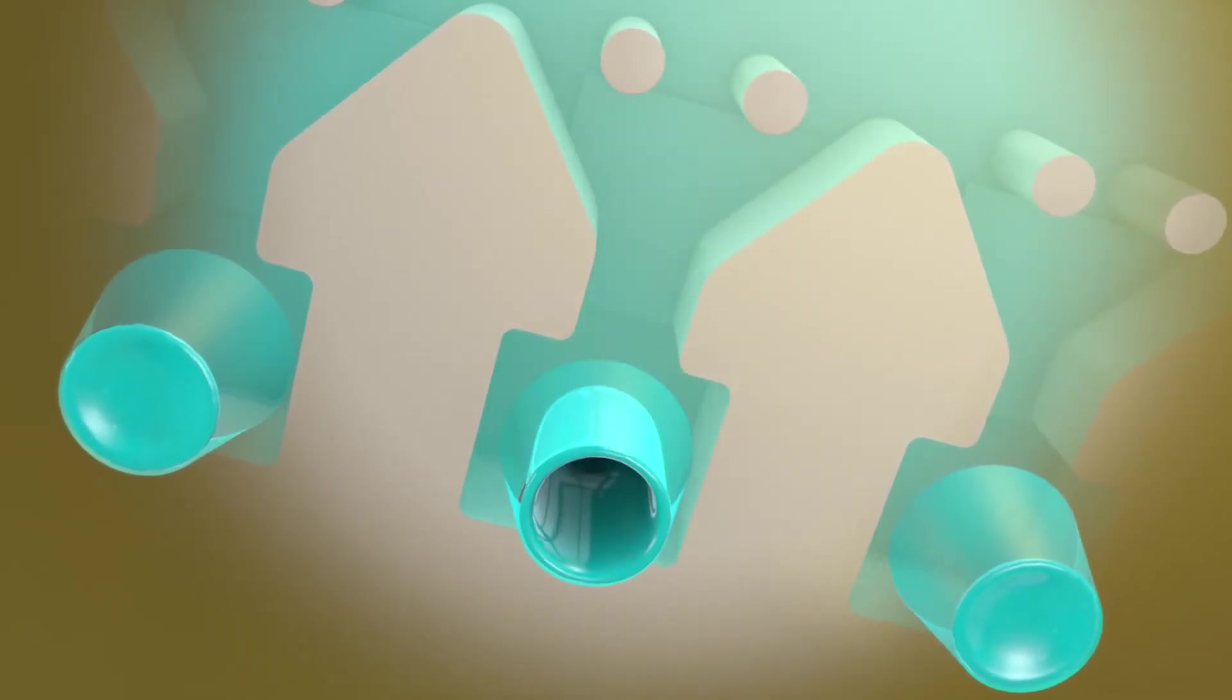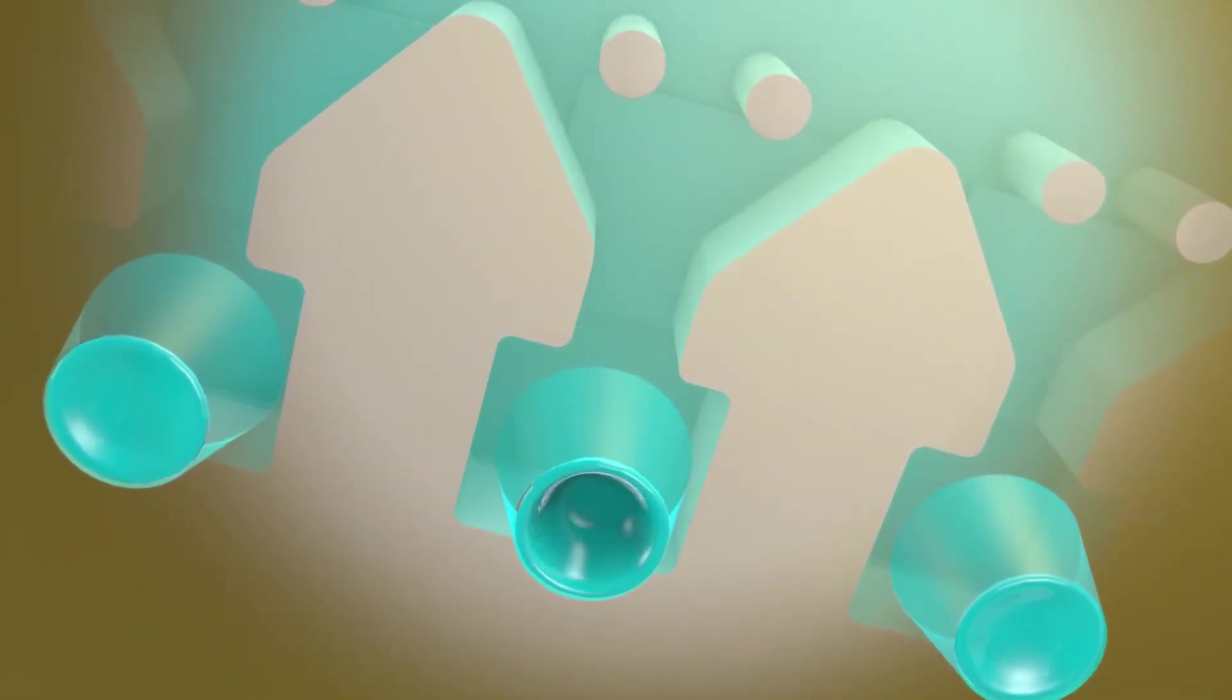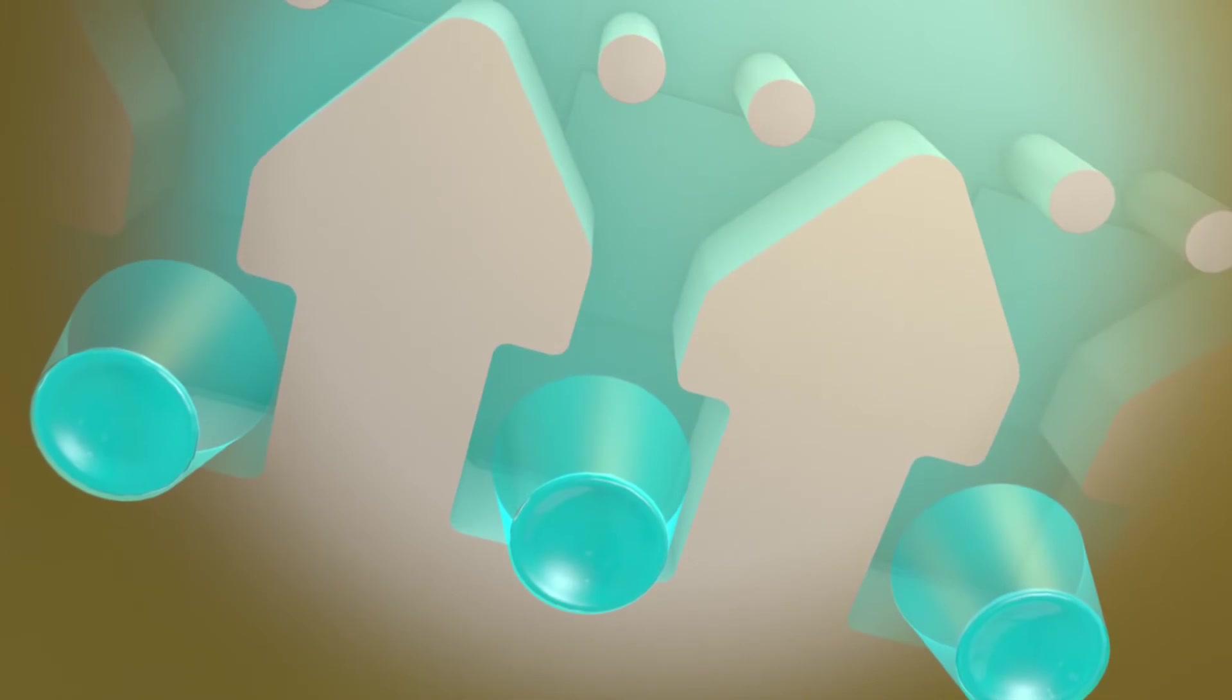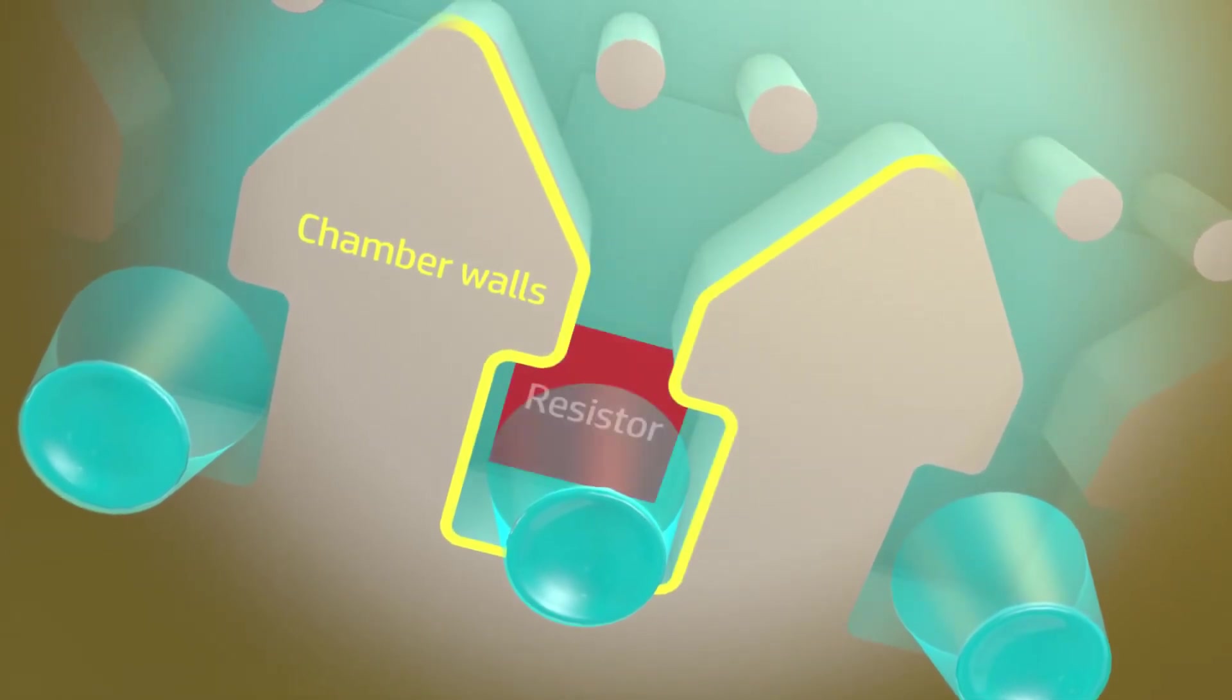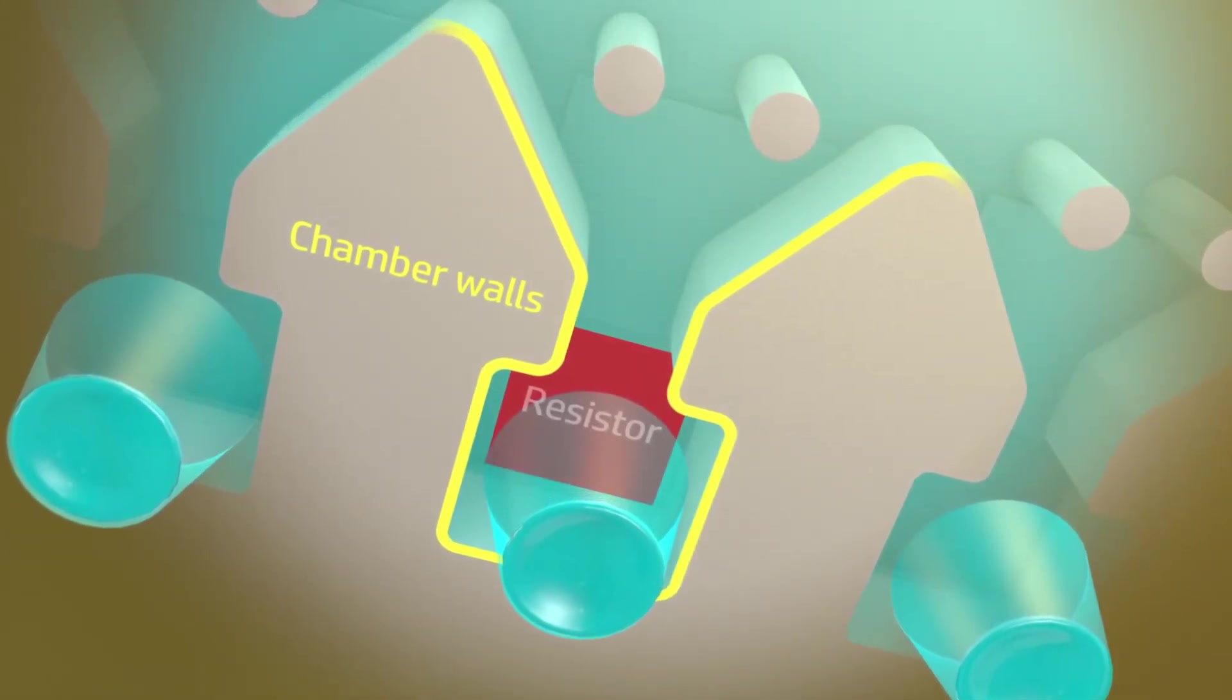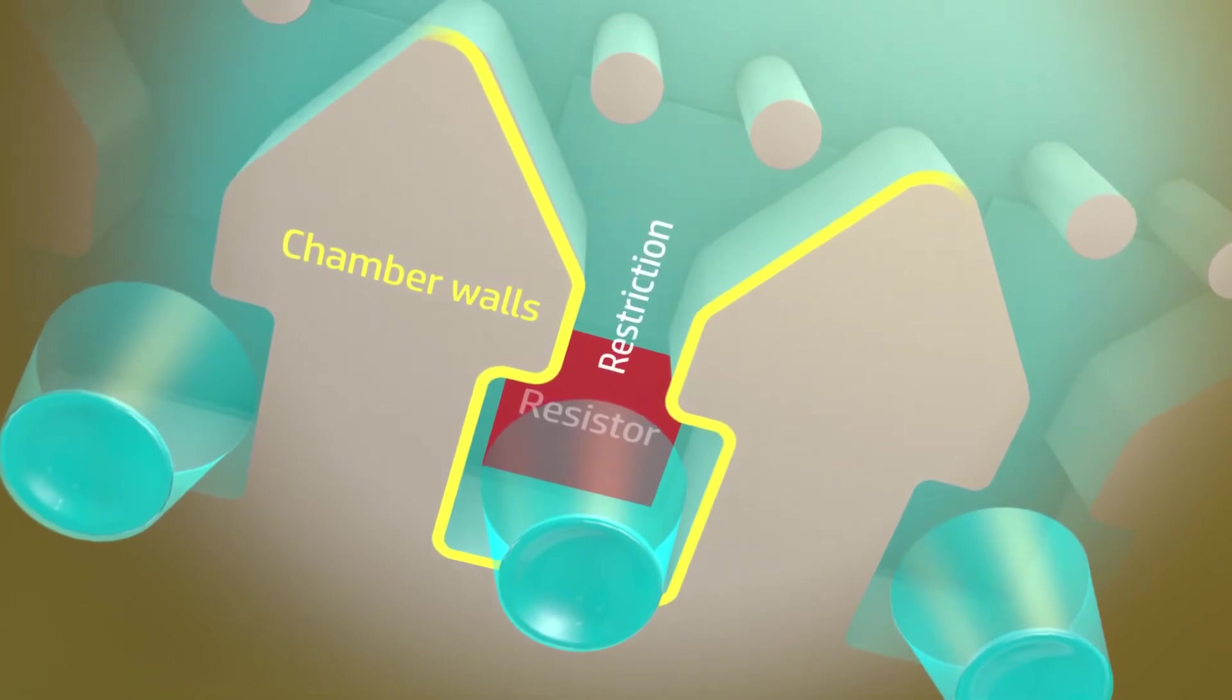Let's take a closer look at a drop generator. So you can see inside, we've made the nozzle plate and cyan ink transparent. Three walls surround a heater resistor on the silicon and the chamber is open to the ink supply through a restriction.